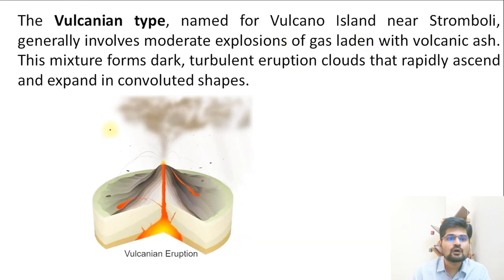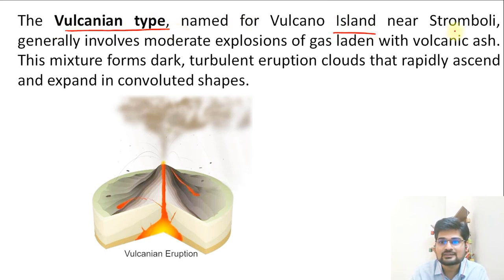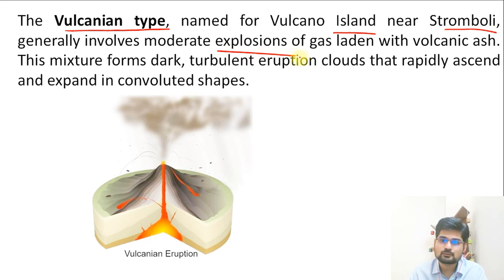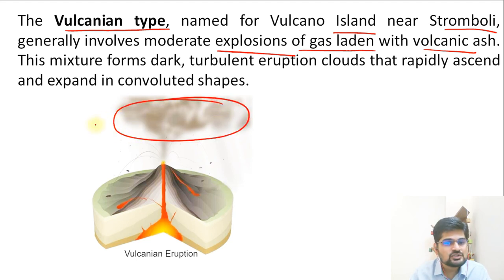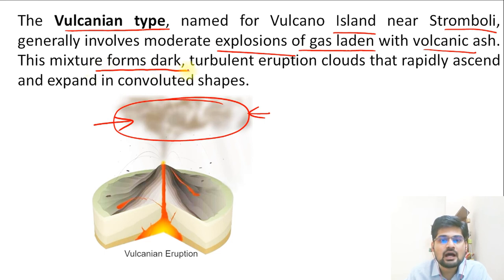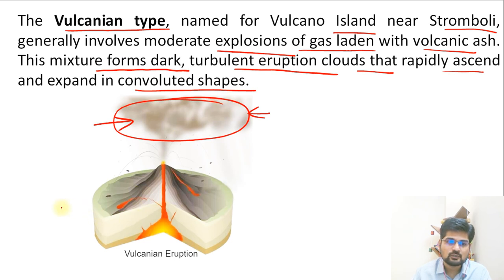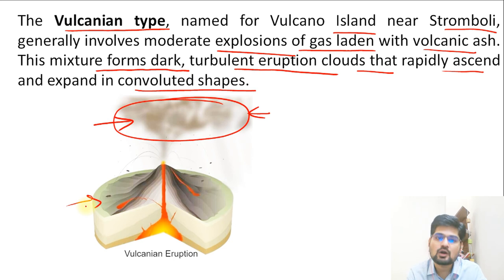The fourth type is Vulcanian, named after Vulcan Island near Stromboli. It is famous for moderate-level explosions, larger than Strombolian. There is an explosion of gas, lava, and volcanic ash, forming dark turbulent eruption clouds that rapidly ascend and expand in a convoluted shape. It is a bigger eruption but still considered moderate.